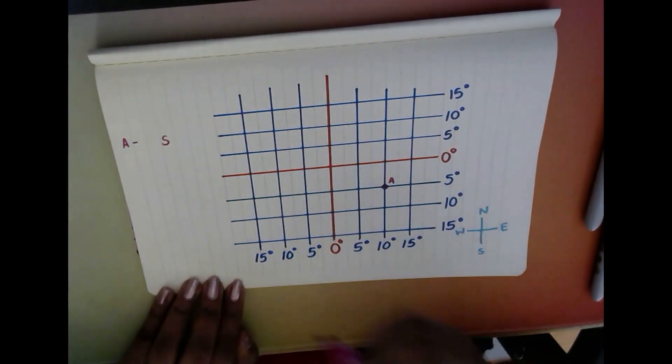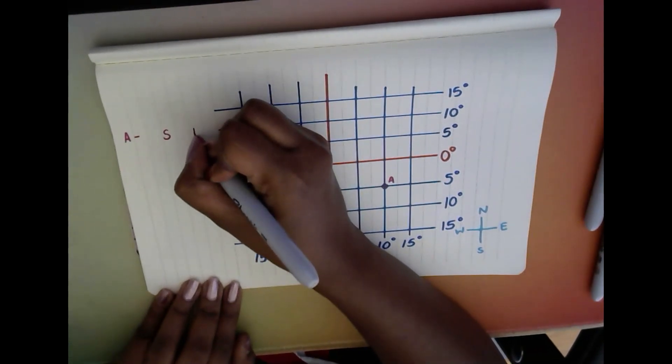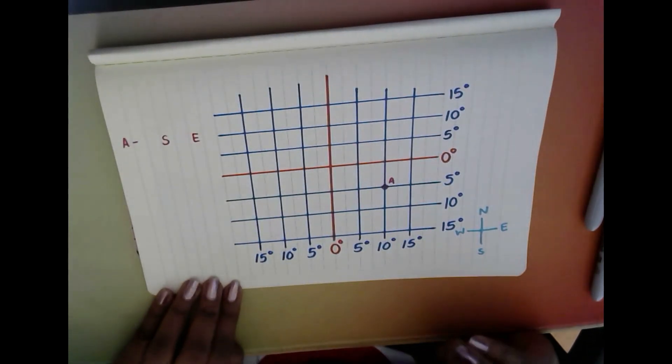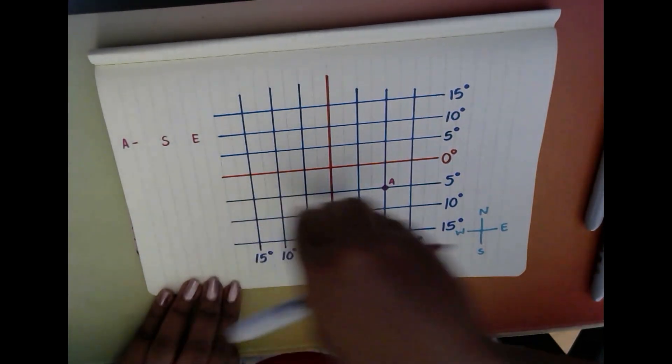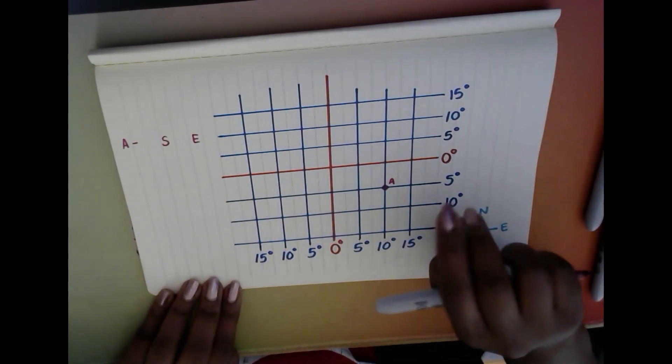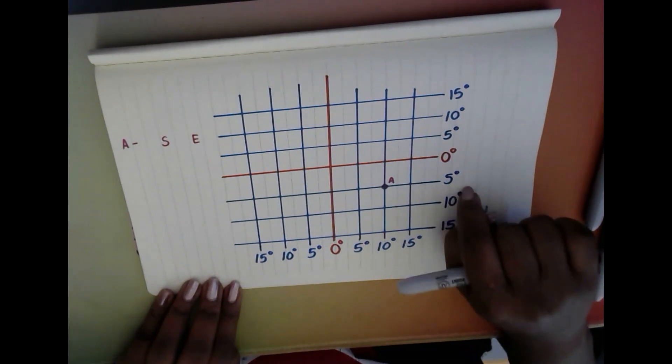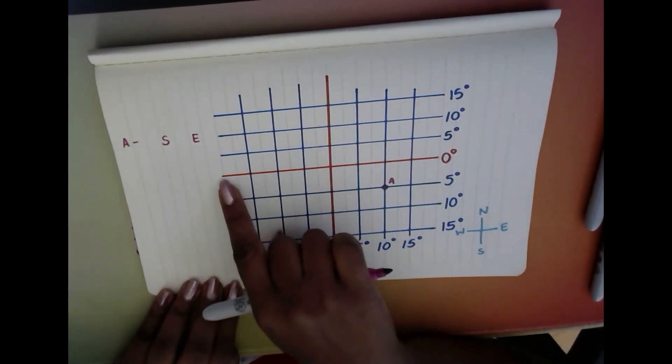Now that we've got our directions in place, we now have to figure out how far south it is and how far east it is. First we're looking at our latitude lines because, very important, we always look at latitude first.